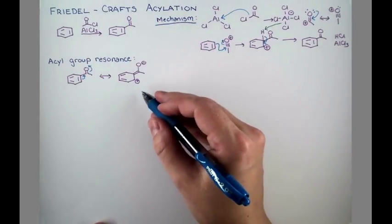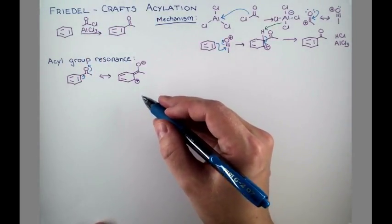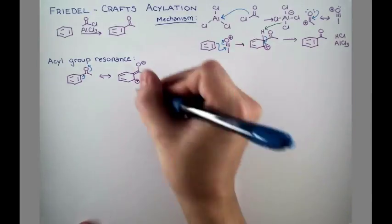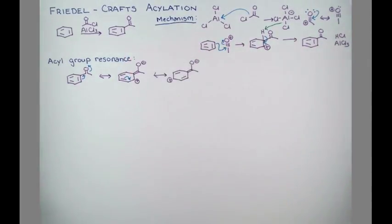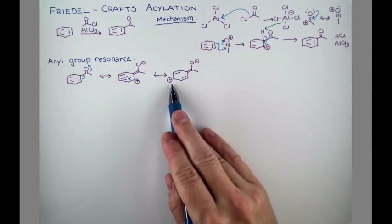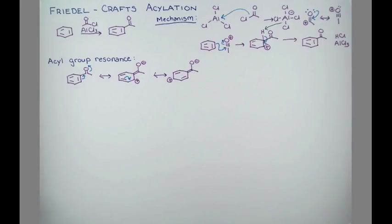This charge-separated resonance form isn't the best resonance form for this molecule, but it does contribute to the overall structure. Let's continue to push electrons around the ring. Now our carbocation is para to this group, and we can push electrons once again to show a final resonance form.